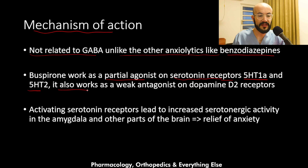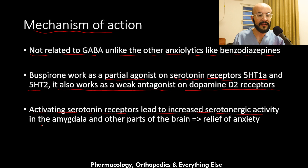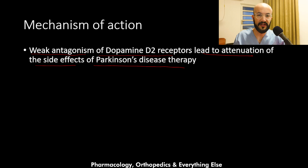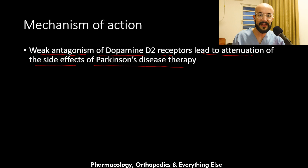Buspirone also works as a weak antagonist on the dopamine D2 receptors. Activating serotonin receptors leads to increased serotonin activity in the amygdala and other parts of the brain, resulting in relief of anxiety. The weak dopamine D2 antagonism will attenuate the side effects of Parkinson's disease therapy, so if a Parkinson's patient takes buspirone alongside their Parkinson's medications, buspirone can help reduce those medication side effects.